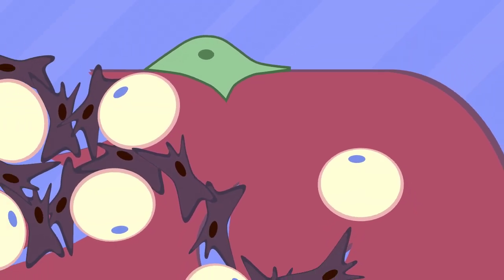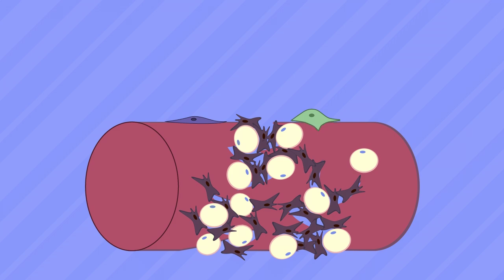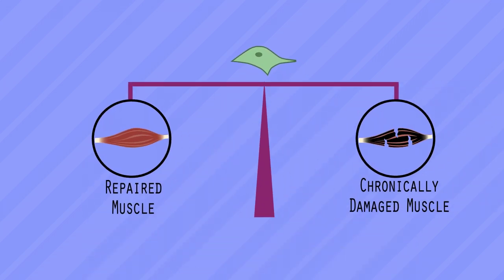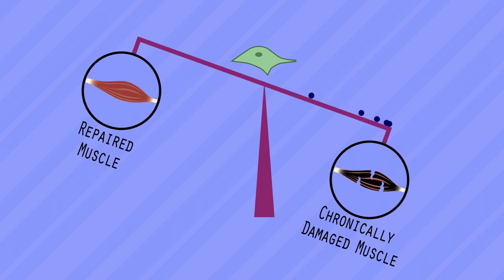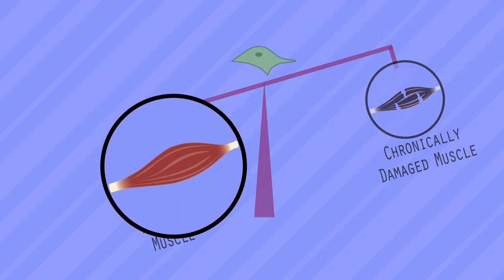Scar tissue then develops, which impairs healthy regeneration of the muscle. However, by researching how FAPs regulate muscle repair, we hope that we can target dystrophy through therapeutic approaches.